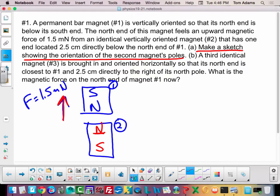Well, that was easy enough, so that's part A. Now let's read part B. A third identical magnet, number three, is brought in and orientated horizontally so that the north end closest to number one is 2.5 cm directly to the right of the north pole. So that means that I have a third magnet, magnet number three, that has a north pole here.